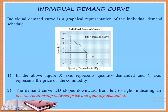If we connect all the locus points of the tabular data, we get a curve which we call the DD demand curve. The demand curve slopes downward from left to right, indicating an inverse relationship between price and quantity demanded.